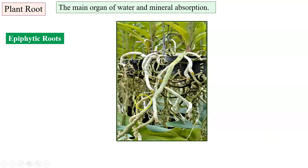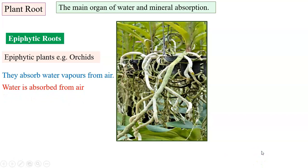They have special types of roots, epiphytic roots. These epiphytic plants for example orchids, they absorb water vapor from air. Water is absorbed from air with the help of these epiphytic roots.